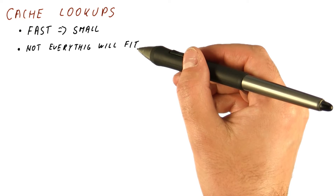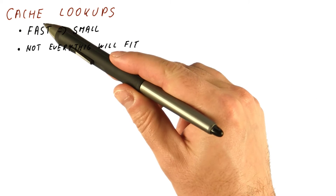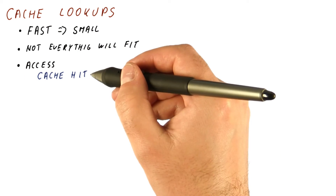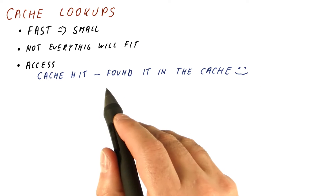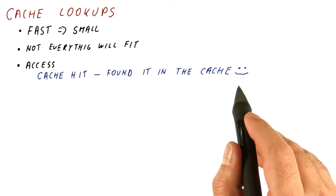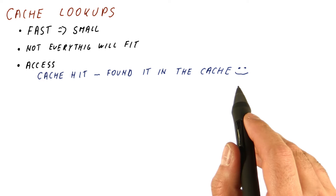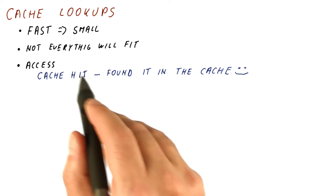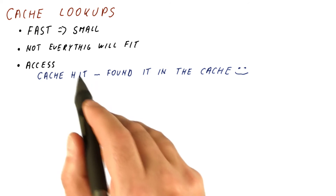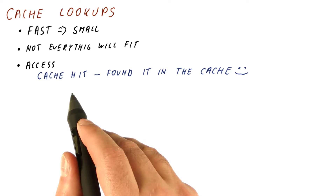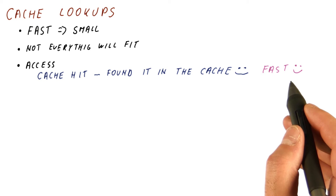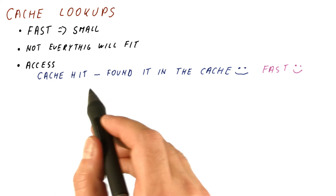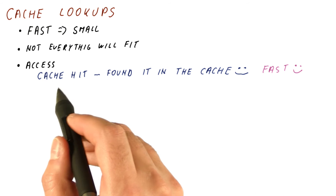There will be a lot of memory locations that we do not have room for in our cache. So when a processor wants to access some memory, we can have a cache hit, which occurs when we find what we are looking for in the cache. The memory location we are interested in was already brought from memory to the cache before, so we can find it quickly. This is what we want — fast accesses for most of our memory accesses, and that happens when we have a lot of cache hits.